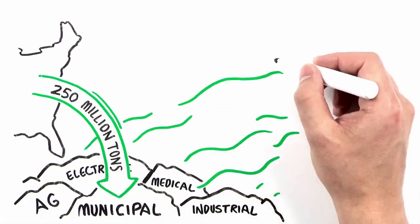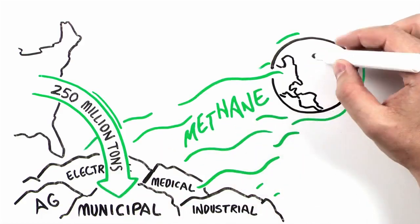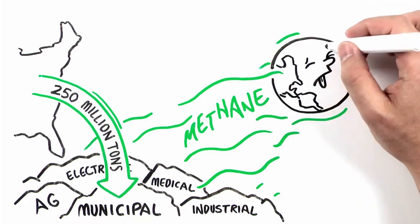Landfills are the largest human-generated source of methane, which is 84 times more climate warming than carbon dioxide.